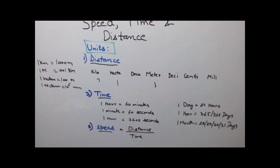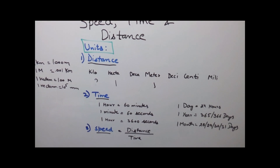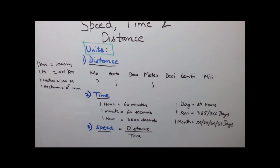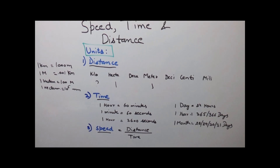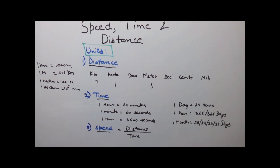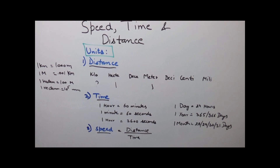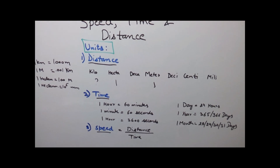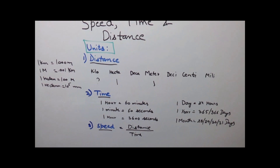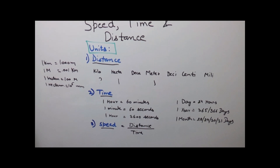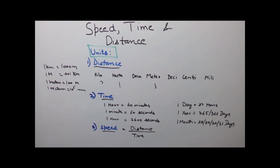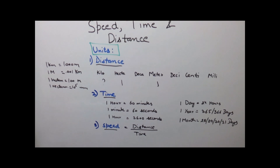1 month can have 28 days, 29 days, 30 days or 31 days. There will be 28 days in February if a year is not a leap year. There will be 29 days in February when it is a leap year. Otherwise months will have 30 days or 31 days.